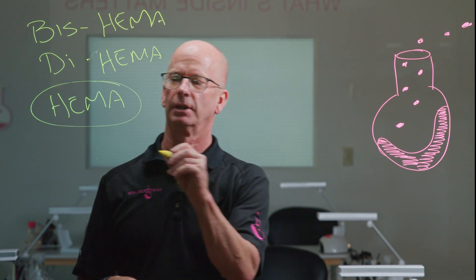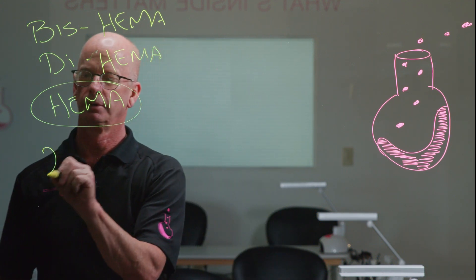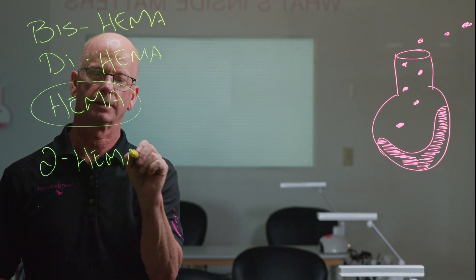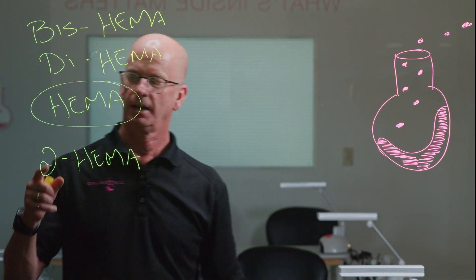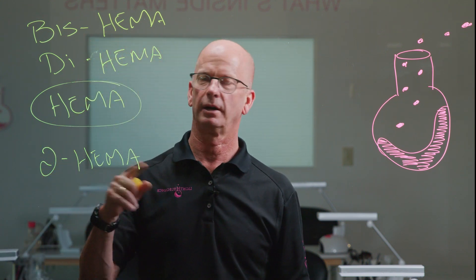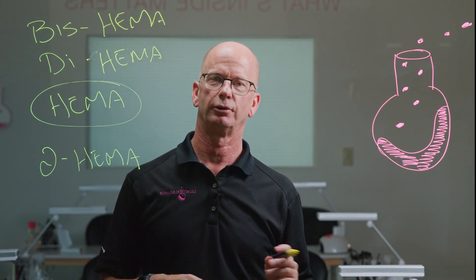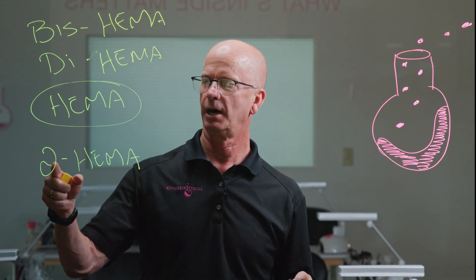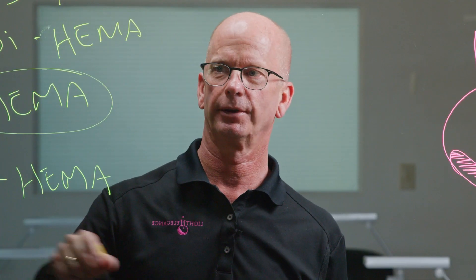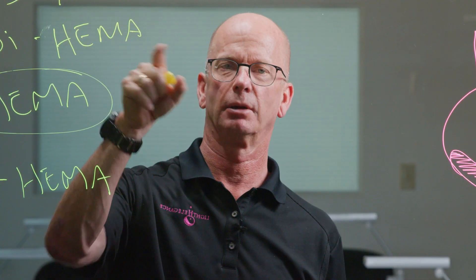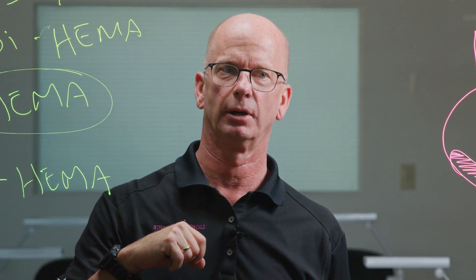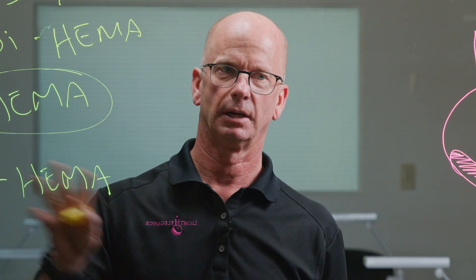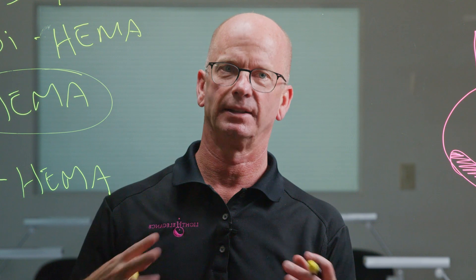HEMA itself is actually 2-hydroxyethylmethacrylate. The "2" tells us where the hydroxy portion is on the HEMA molecule. This is actually the chemical that's used to make the BiSHEMA or DiSHEMA oligomer.